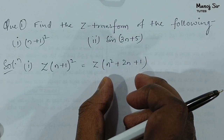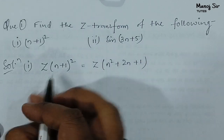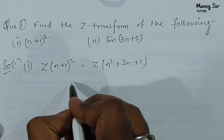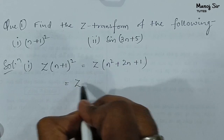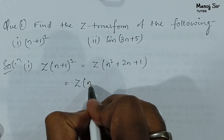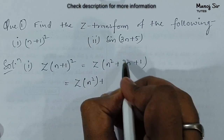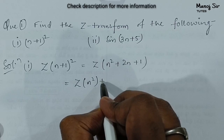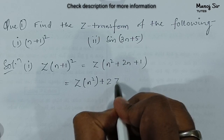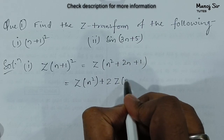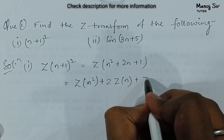We will separate this using the linearity property. So this is going to be: Z-transform of n squared, plus 2 — which is a constant — so 2 into Z-transform of n, plus Z-transform of 1.